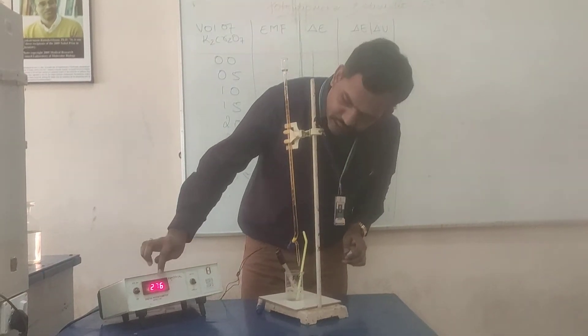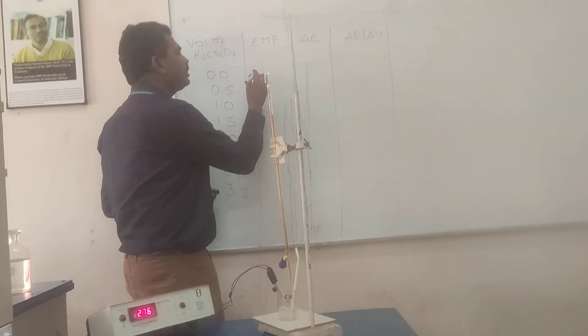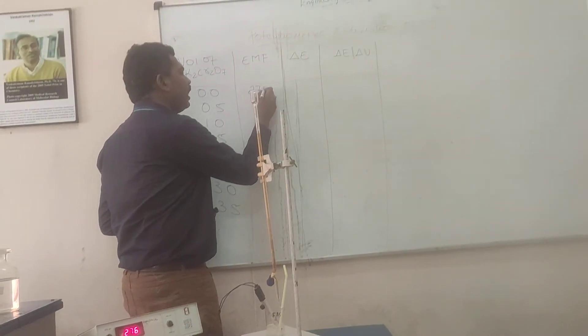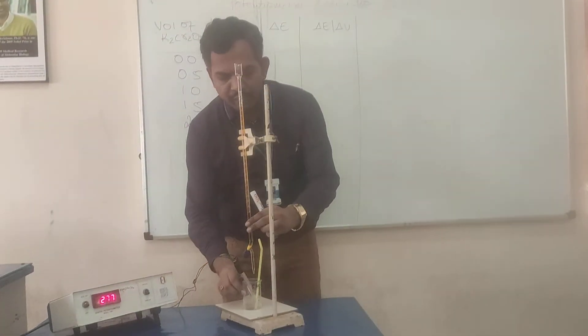So, this zero reading has 278. Before adding potassium dichromate, it has 278. So, we are going to add potassium dichromate with the increments of 0.5 ml.